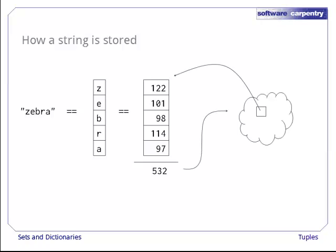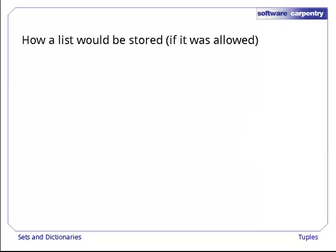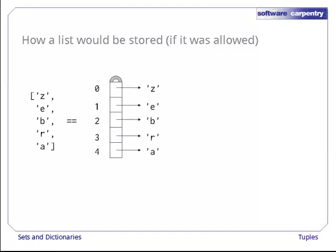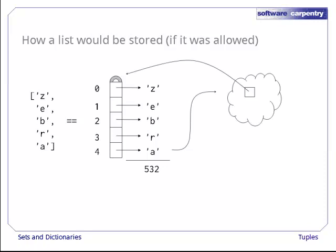Once we have this integer, we can use it to figure out where in the hash table the string should be stored. Now let's take a look at how a list would be stored if we were allowed to store lists in sets. For the sake of this example, let's assume that the list contains the same five characters, so it's represented like this. For our hash function, we can add up the character values as before. The final picture of what's in memory looks similar to what we had when we stored a string.